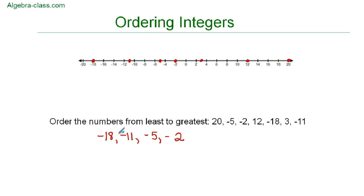Even though it looks like 18 would be larger than 2, when we're working with negative numbers it actually works in reverse. The larger the negative number, the farther it is away from zero on the number line, which means that it is smaller. So negative 18 is smaller than negative 2, and that's why it comes first, because we're ordering from least to greatest.